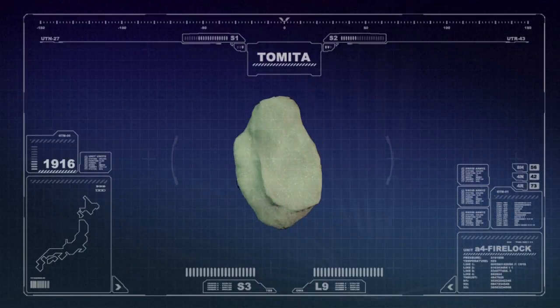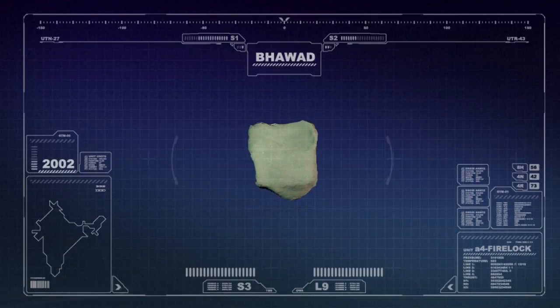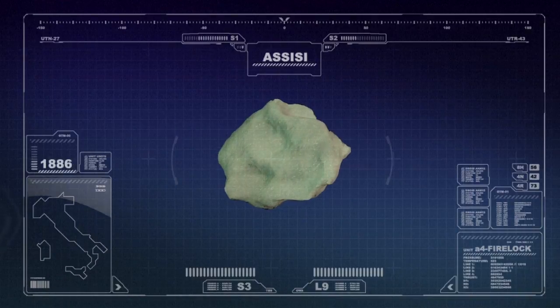Meteorites are named by the Meteoritical Society, an organization that catalogues meteorites according to where they fall.